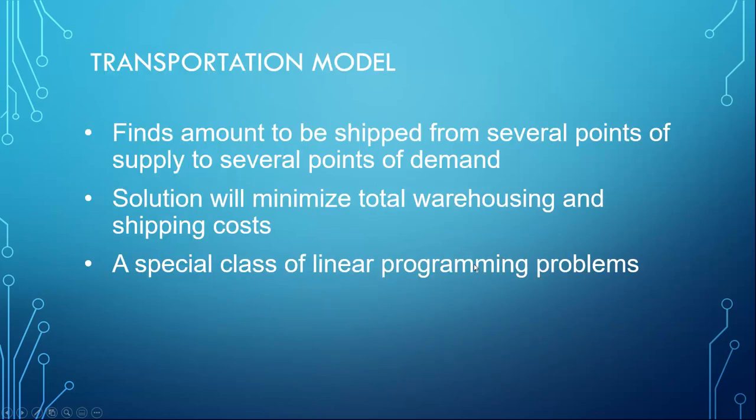For more complex location selection and we have more factors that will be involved and we have linear relation between the different factors, the transportation model should be used. The model finds amounts to be shipped from several points of supply to several points of demand. And the solution will be to minimize total warehousing and shipping cost. That will be the main objective of the formula. To solve such a problem, we use a special class of linear programming.